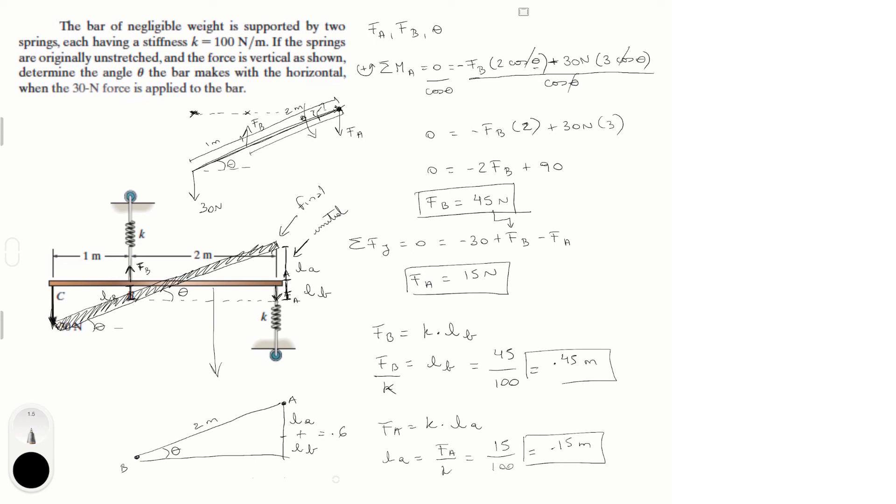And look we have a basic trigonometry problem. You know that 2 times the sine of theta is equal to 0.6, which is the sum of these two, and you just solve for theta. Theta is equal to sin inverse of 0.6 over 2, theta is equal to 17.46 degrees. Final answer for theta, F_B, and F_A.